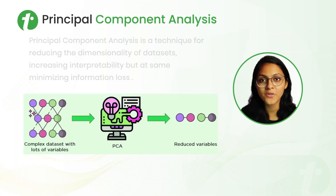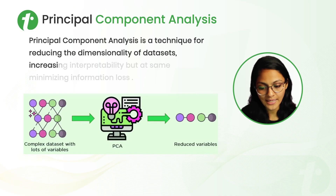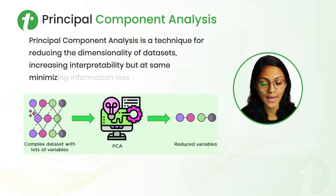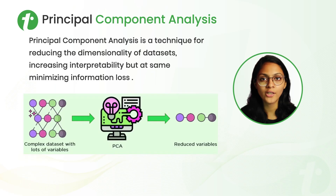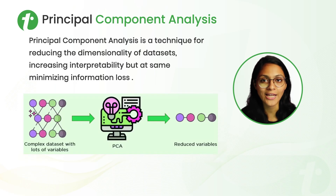Now let's talk about Principal Component Analysis. It is a technique for reducing the dimensionality of a dataset by increasing interpretability while at the same time minimizing information loss. We reduce dimensionality for convenience, but we never want to lose information, so for minimizing information loss, Principal Component Analysis comes into the picture.